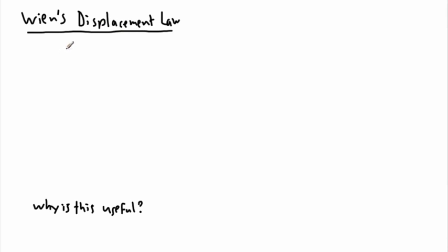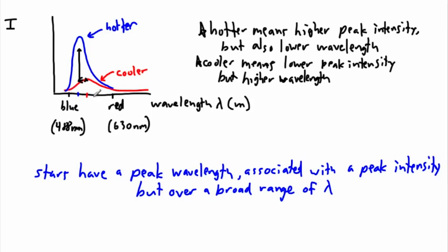The equation says lambda max — in other words, that peak wavelength — and when we look at this drawing, it all comes from this drawing right here. So the wavelength in this case is the wavelength for this cooler, red one. The wavelength where it has peak intensity — that's the peak wavelength. Whereas this blue one, its peak wavelength is over here. So we call this lambda max.